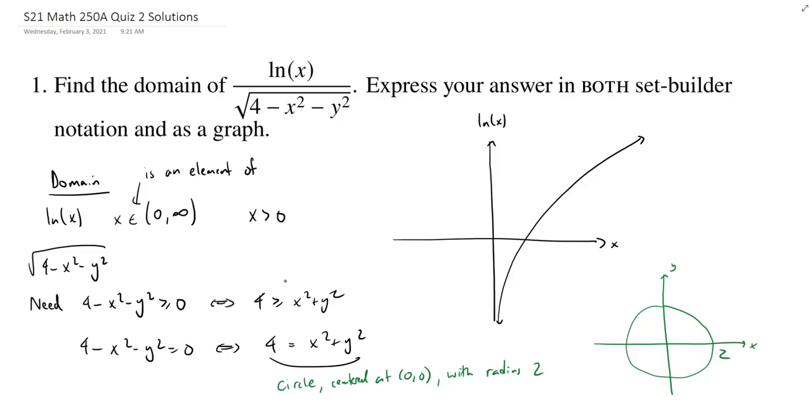We can say this is 4 greater than or equal to x squared plus y squared. So this is telling you that you need to be inside the circle. The radius has to be less than or equal to 2. So we're actually looking for all this stuff inside or possibly on the boundary.